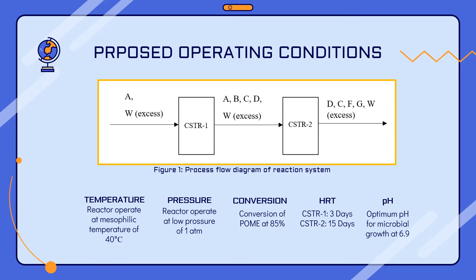The treatment process applied for the proposed reaction system is anaerobic digestion, taking place in two CSTRs arranged in series. The system will operate at a temperature of 40 degrees Celsius, pressure of 1 atm, 85% conversion, hydraulic retention time of 3 days for reactor 1 and 15 days for reactor 2, and pH at 6.9.